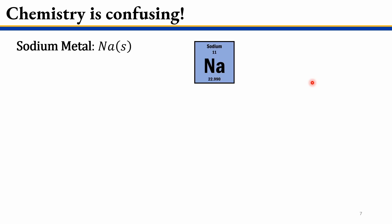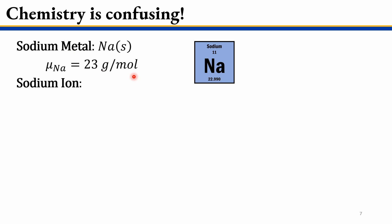First we have sodium metal, which when you look at the periodic table is element number 11, and its molecular weight is about 23 grams per mole. I'm going to use mu with a subscript of the species to denote the molecular weight. We're not looking at sodium metal though — we're looking at sodium as an ion, which has an electron extracted giving it a positive charge, but the molecular weight is still approximately 23 grams per mole.